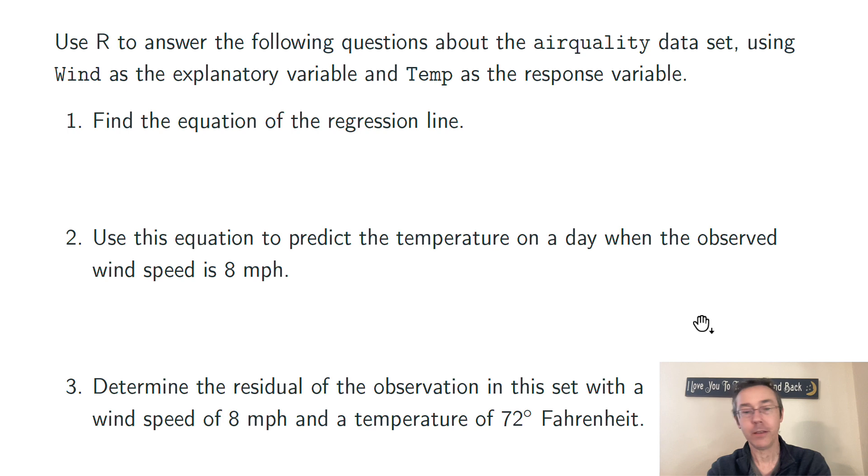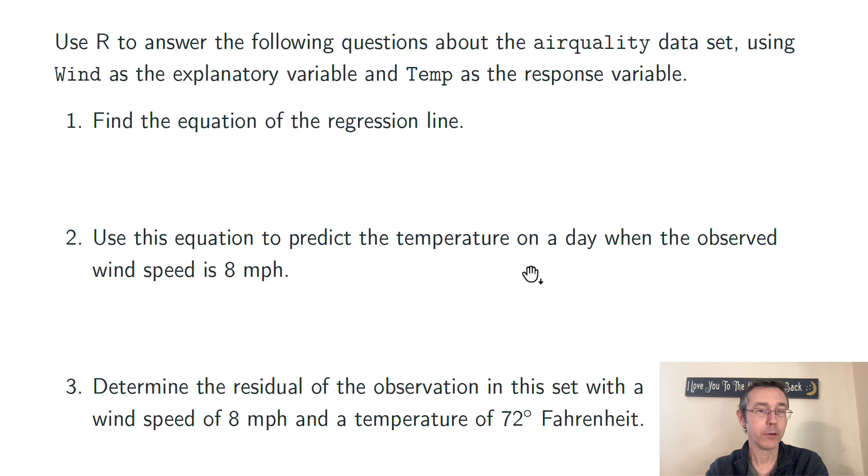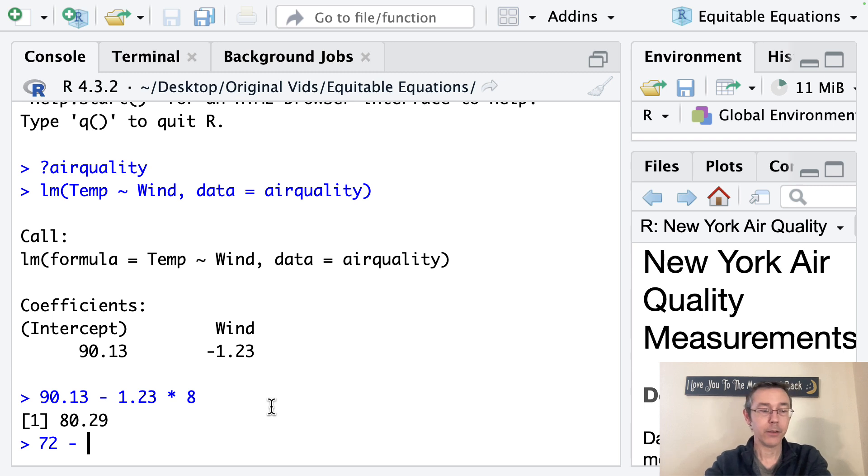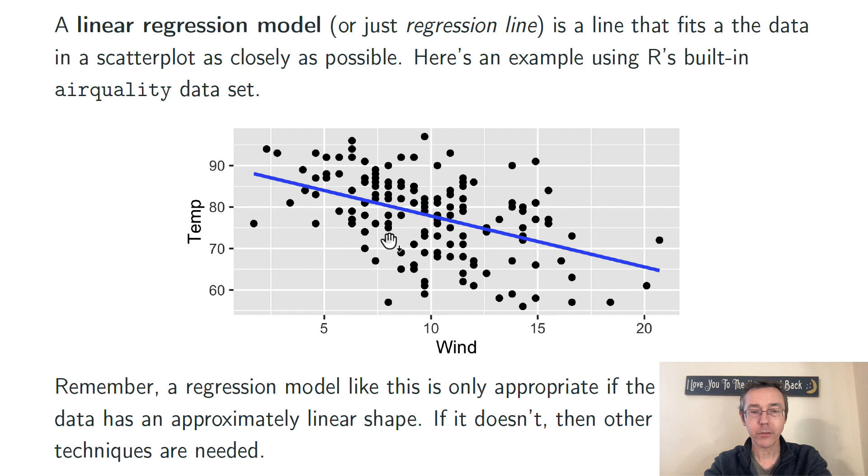Okay. Determine the residual of the observation in this set that has a wind speed of 8 miles per hour and a temperature of 72 degrees Fahrenheit. There actually is such an observation in this set. It's right about here. I think it's this one. I think it's the second observation in the set. We'd like to know how does this differ from what we've predicted? What was our fitted value? So we're going to take our fitted value, our predicted value, and then subtract off. Sorry, I said that backwards. We're going to take the value that we actually got and then subtract off the value that we predicted. So the value we actually observed was 72. The value that we predicted was 80.29. So the difference is negative 8.29. This negative residual indicates that the prediction was too great. The actual value was lower. The actual observed value is 8.29 degrees below what the model predicted. Visually on this graph, that means this point, 8 comma 72, is 8.29 units below the regression line.